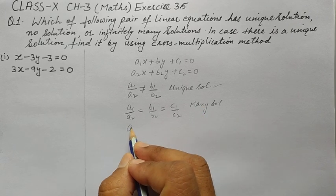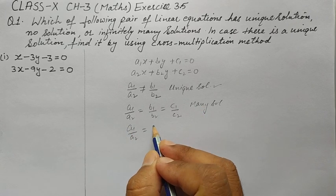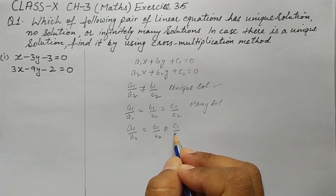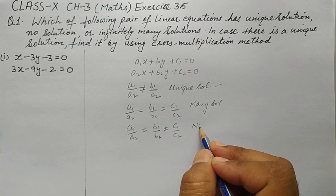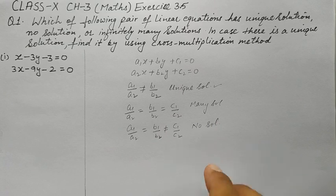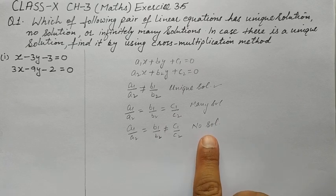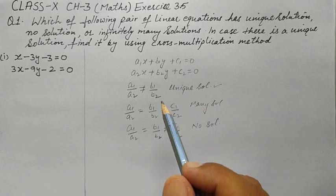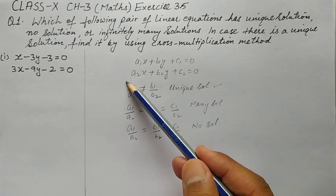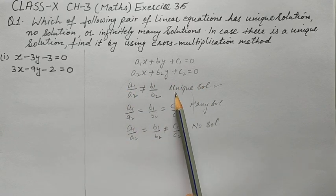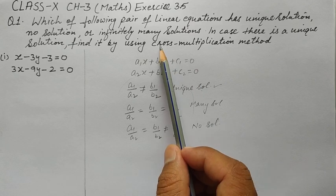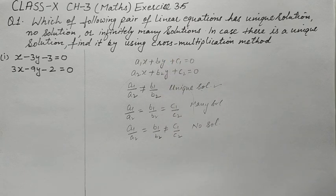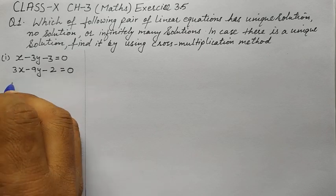The third condition is when a1/a2 = b1/b2 but does not equal c1/c2 — then there is no solution, because the lines are parallel. So for each part, we first determine which condition applies, and if there is a unique solution, we find it using the cross multiplication method.